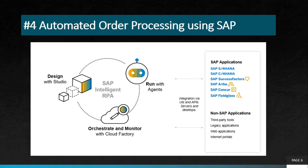Next in our list is automated order processing using SAP. This project aims to automate the entire order processing cycle from order creation to invoicing using SAP. This will help businesses reduce processing time, minimize errors, and improve customer satisfaction. The SAP system can be configured to automatically create invoices and shipping labels based on customer orders, eliminating the need for manual intervention.